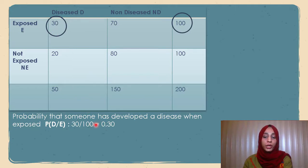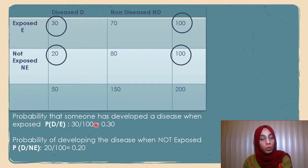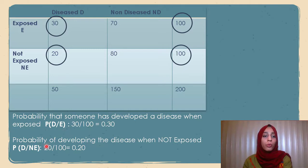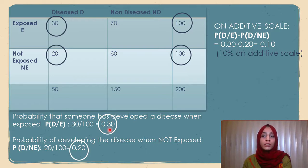Similarly, the probability of developing the disease when not exposed is 20 divided by 100, meaning 100 people were unexposed yet 20 developed the disease. So we have these two probabilities. On an additive scale, we subtract: 0.30 minus 0.20 equals 0.10, meaning 10% on an additive scale.